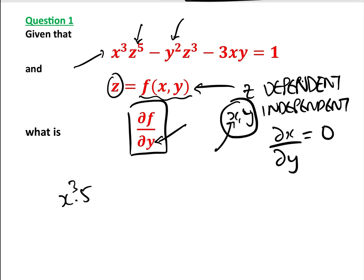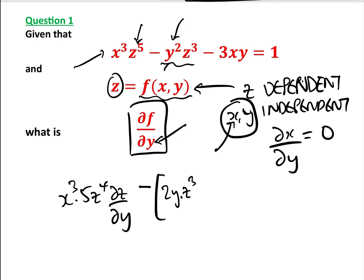We have x³ times 5z⁴ — that's differentiating implicitly with respect to z, so we multiply by dz/dy. Then this term involving y and z requires the product rule: differentiating y first gives 2y times z³, then add y² times differentiating z³ with respect to z, which is 3z² times dz/dy.